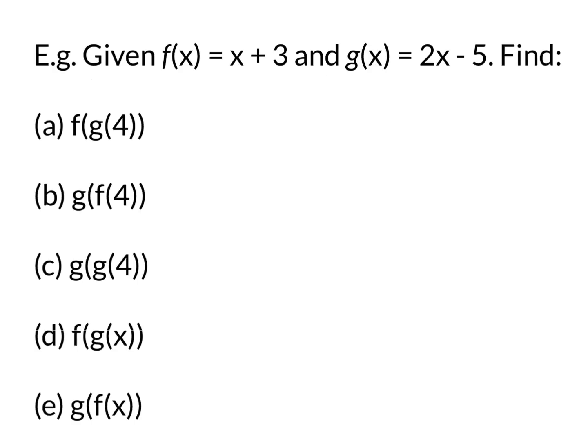We're going to use the function f(x) = x + 3 and g(x) = 2x - 5. And we're going to find a whole bunch of different combinations. You can see they're all in the format of a first function.